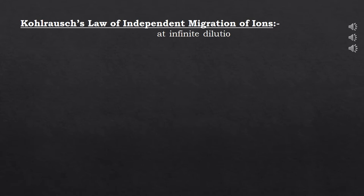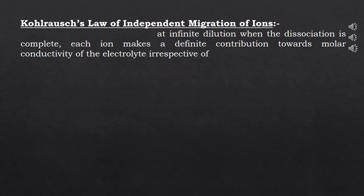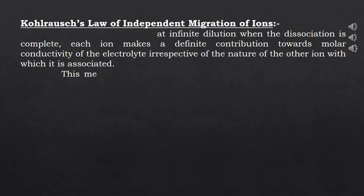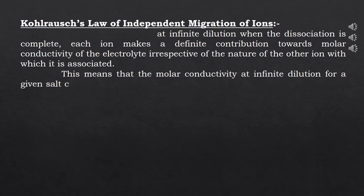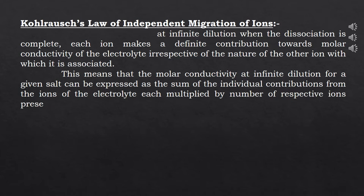At infinite dilution, when the dissociation is complete, each ion makes a definite contribution towards the molar conductivity of the electrolyte, irrespective of the nature of the other ion with which it is associated. This means that the molar conductivity at infinite dilution for a given salt can be expressed as the sum of the individual contributions from the ions of the electrolyte, each multiplied by the number of respective ions present in the formula unit of electrolyte.